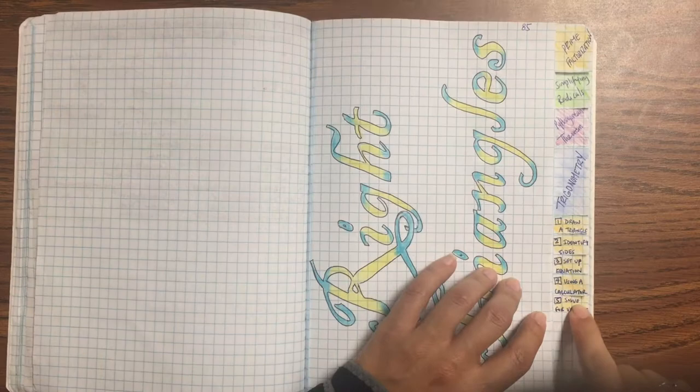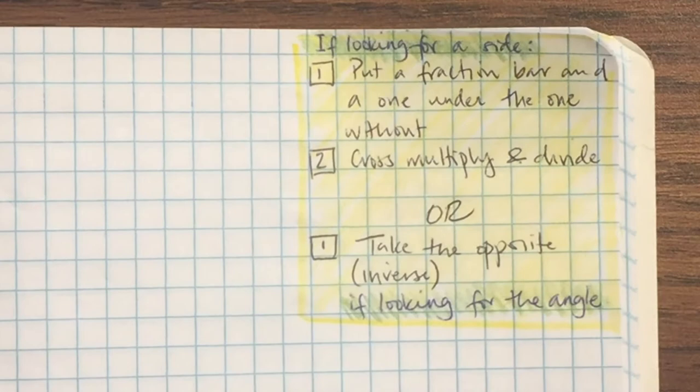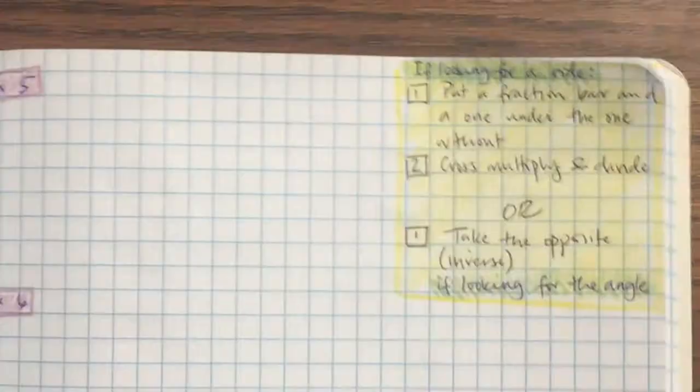We're going to take a look at the last step, which is solving for the variable, the easiest one of them all. So the fifth step, solving for the variable. You're just going to put the fraction bar and a one underneath the one without, cross multiply and divide, or you're going to take the inverse, whichever one we have.